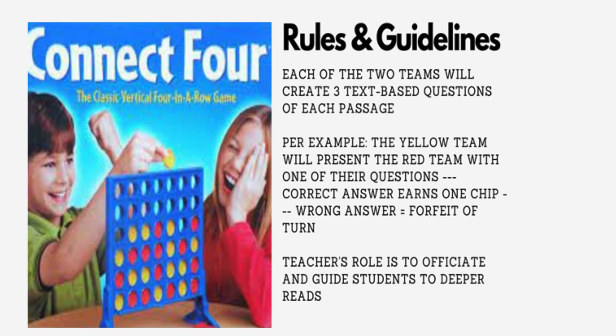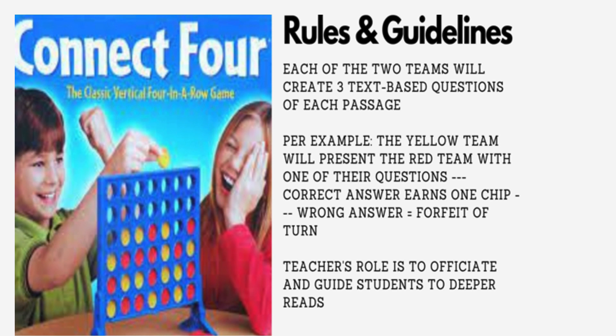I'm going to split the class into a yellow team and a red team. Each of the two teams will create a minimum of three text-based questions for each passage. The yellow team will present the red team with one of their questions, and the correct answer earns one chip — you either drop it or you don't. Wrong answers forfeit the turn. My role is kind of the game show host: I beg and plead students to go deeper and get their nose in the text, or if the answer is just blatantly wrong, I say you're wrong and have the team unpack it so our comprehension is all squared away.